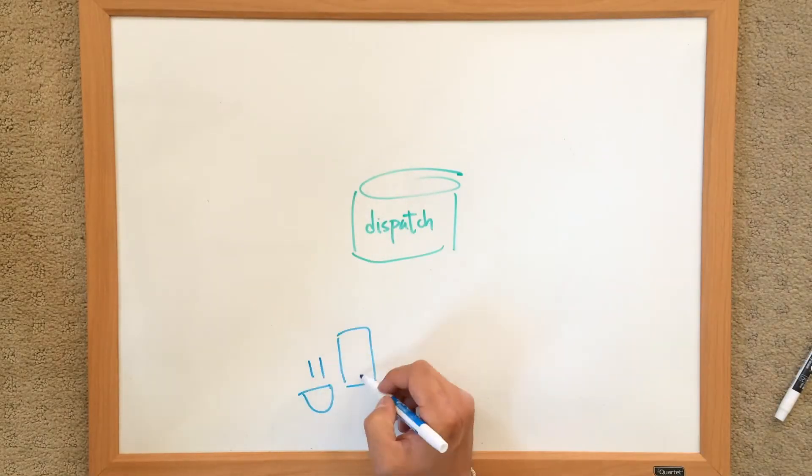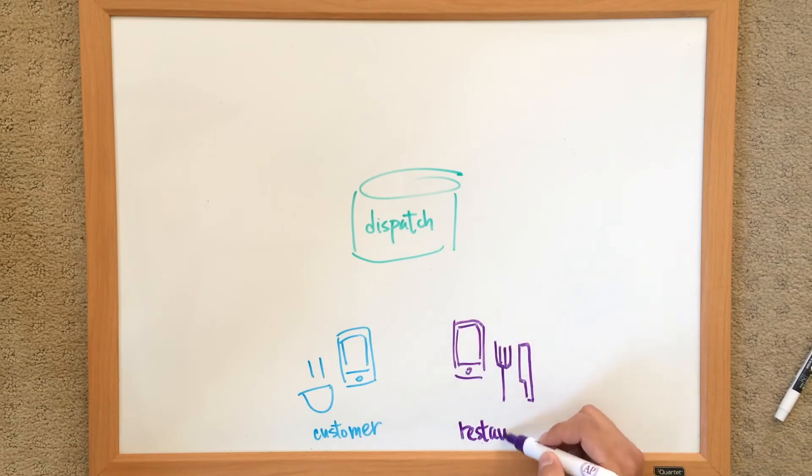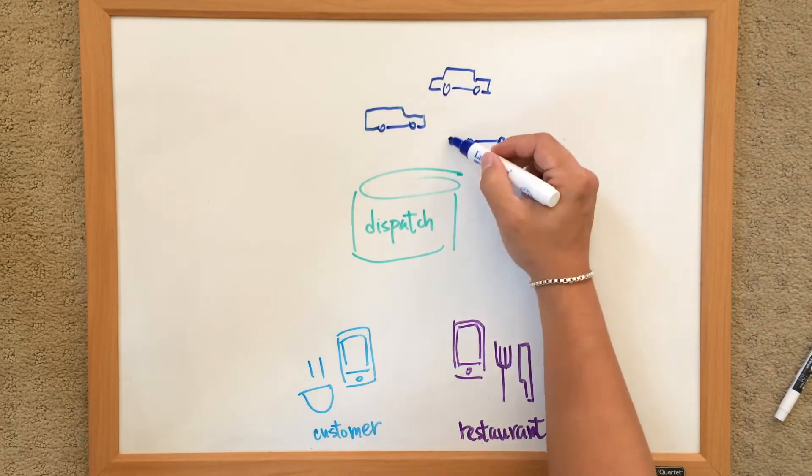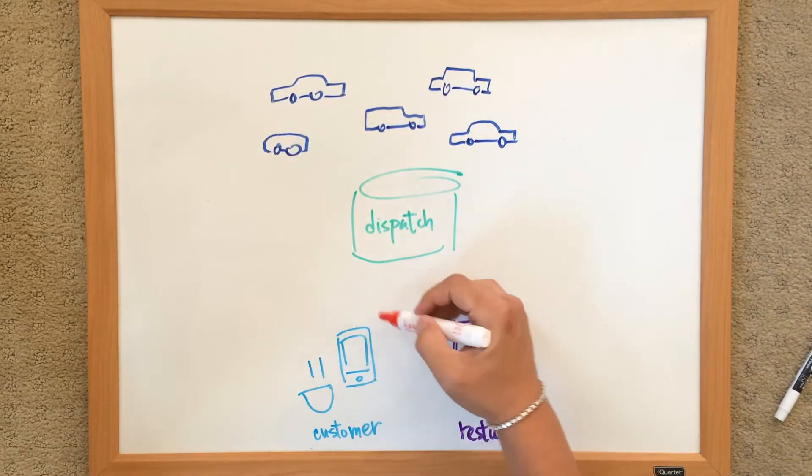What we're building is a crowdsourced fleet of drivers that can be summoned by a simple text. No app download, no account setup, and no linking to a credit card. The text just comes in to us, gets translated into an order, and then the best driver gets assigned. What this means is there's virtually no barrier to entry because anyone can send a text message.